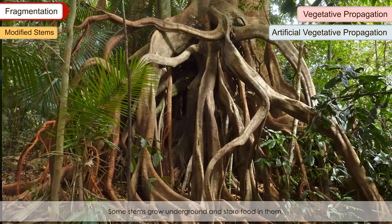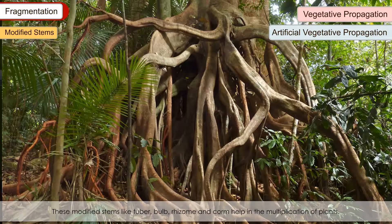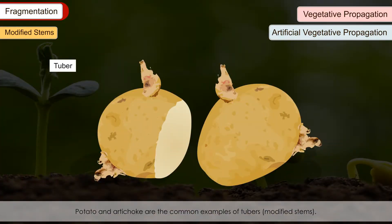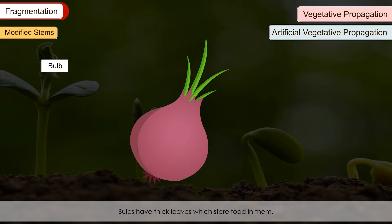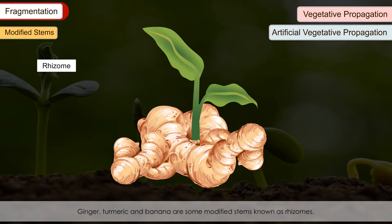Modified Stems: Some stems grow underground and store food in them. These modified stems — tuber, bulb, rhizome and corm — help in the multiplication of plants. Potato and artichoke are common examples of tubers; their eyes or buds develop into new plants. Onion, garlic, tulip, lily and tuberose are modified stems known as bulbs, which have thick leaves that store food. Ginger, turmeric and banana are modified stems known as rhizomes, whose buds produce outgrowths that become new plants.